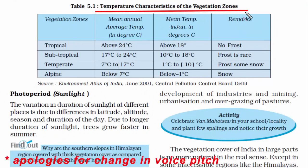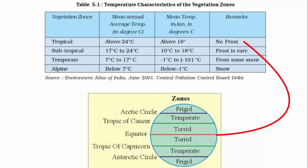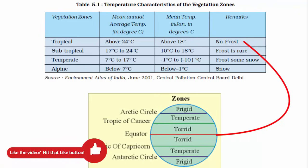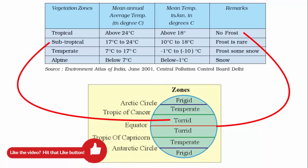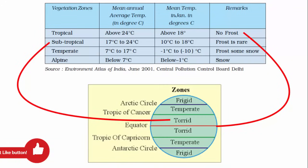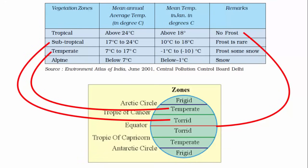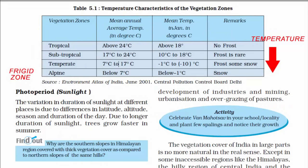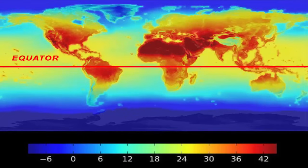This diagram shows the temperature characteristics of vegetation zones. The earth is divided into zones: the region between the Tropic of Cancer and Tropic of Capricorn is called the torrid zone or subtropical zone. Above that is the temperate zone, and at the extremes we have the frigid zone. As we go from the tropical to the alpine region — alpine being the frigid zone — the temperature decreases. In other words, as we move away from the equator in both the northern and southern hemisphere, the temperature decreases.